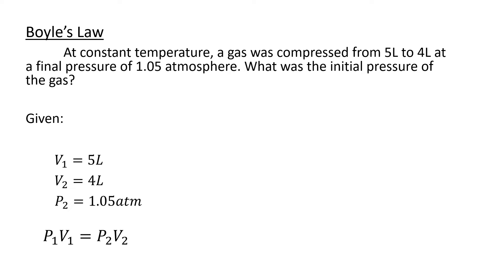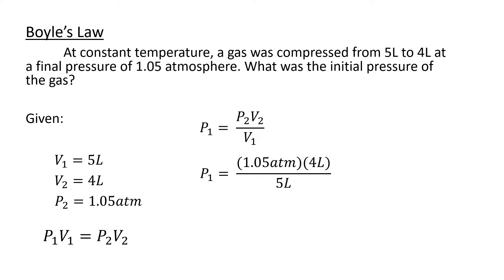From the formula P1V1 = P2V2, we derive P1 = P2V2 / V1. Substituting: P1 = (1.05 atm × 4L) / 5L. The unit of liters cancels out, leaving atmosphere. So P1 = 0.84 atm. We see that P1 is less than P2, which confirms the pressure increased and the volume of the gas decreased.